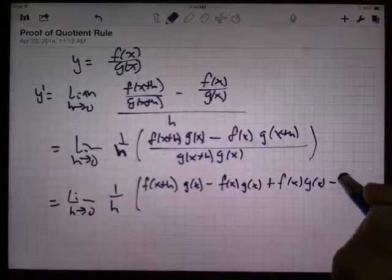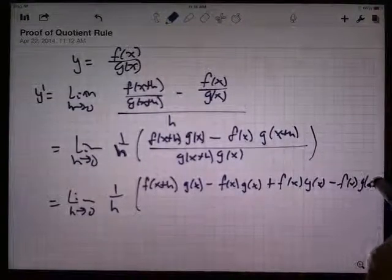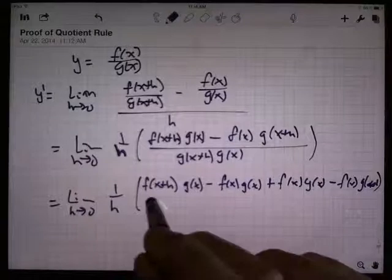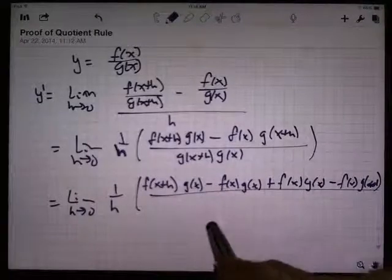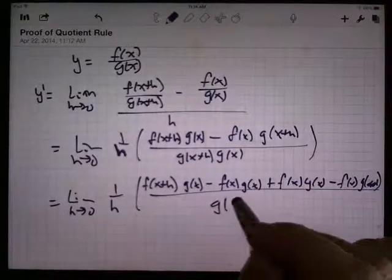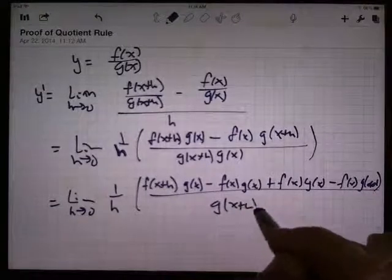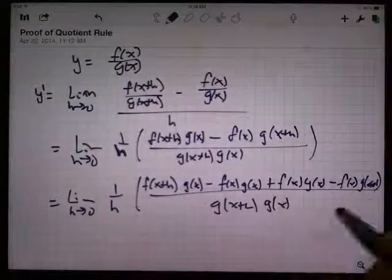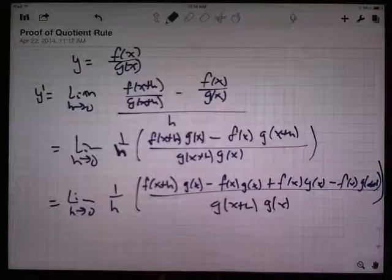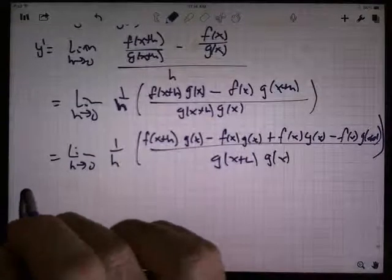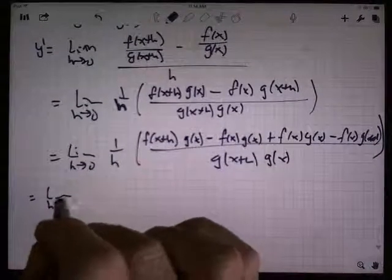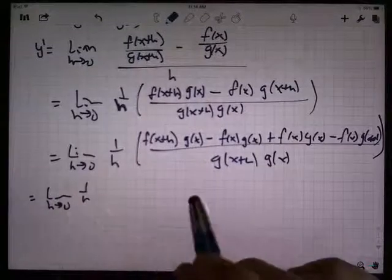Then I have minus f of x times g of x plus h, all over g of x plus h times g of x, with parentheses around the whole thing there.